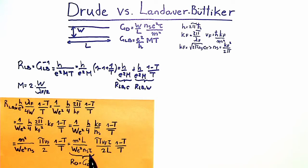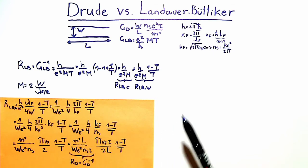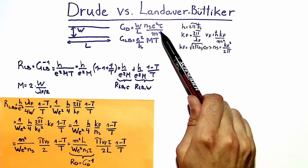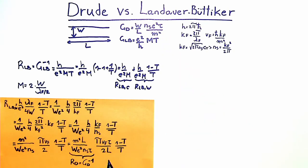We can now associate this prefactor with the Drude resistance — this is the full Drude resistance, the inverse of the Drude conductance, times another factor. Comparing this wire resistance with the Drude resistance, this additional factor should be equal to 1.